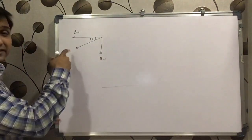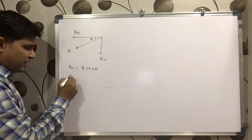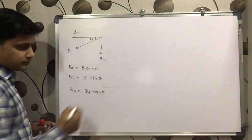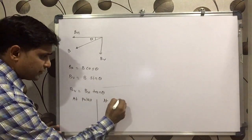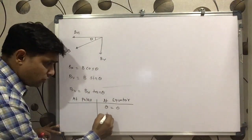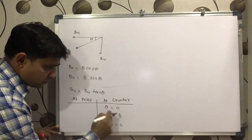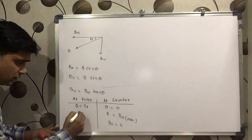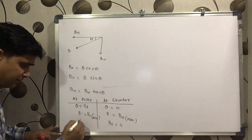This angle is the angle of dip. By simple trigonometry: BH = B cos θ, BV = B sin θ, and BV = BH tan θ. At the equator, the angle of dip is zero, so BH will be maximum with value B, and BV will be zero. At the poles, angle of dip is 90 degrees, BV will be maximum and BH will be equal to zero.